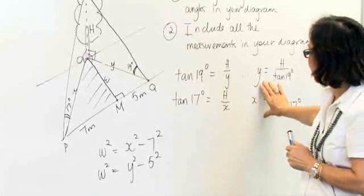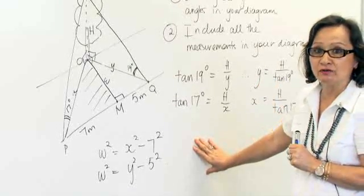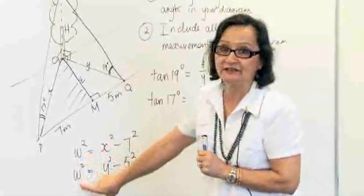Substituting for X and Y, we will then have two equations with two unknowns. And we need to solve those two equations to find W.